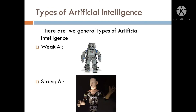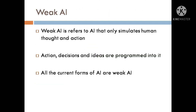There are two general types of Artificial Intelligence: Weak AI and Strong AI. Weak AI refers to AI that only simulates human thought and action. Actions, decisions, and ideas are programmed into it. All the current forms of AI are Weak AI. These programs act intelligently but are not truly intelligent. For example, advanced test programs, personal assistants, translators, etc. The responses given by these systems are a part of their programming.